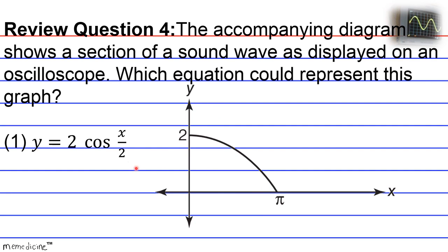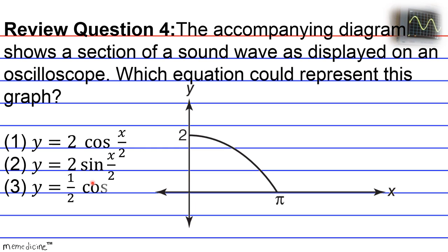Is it 1: y is equivalent to 2 times the cosine of x over 2? Is it 2: y is equivalent to 2 times the sine of x over 2? Is it 3: y is equivalent to 1 half times the cosine of 2x? Or is it 4: y is equivalent to 1 half times the sine of 2x?